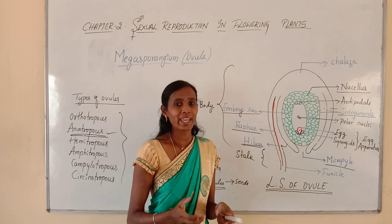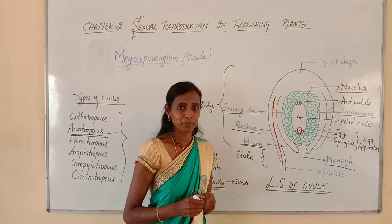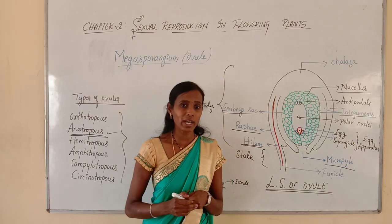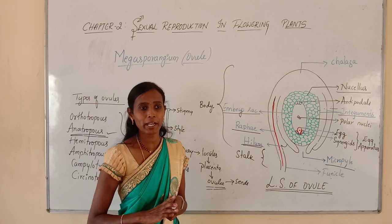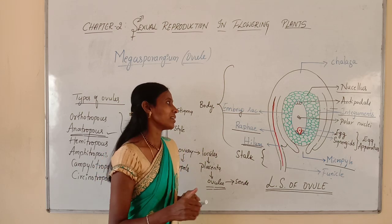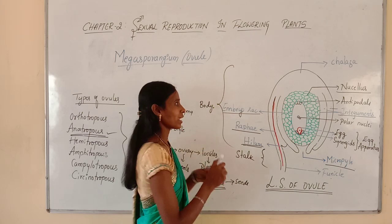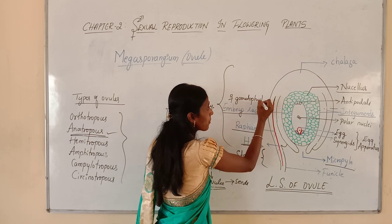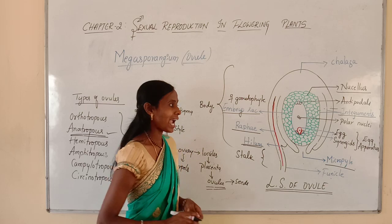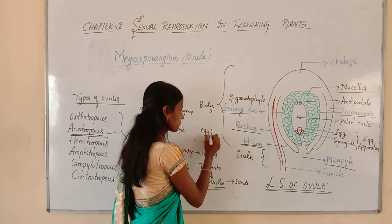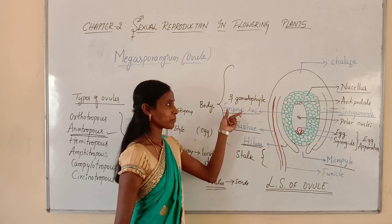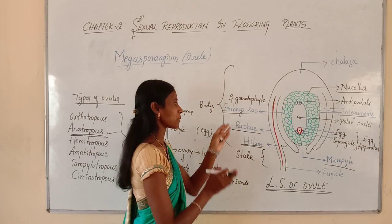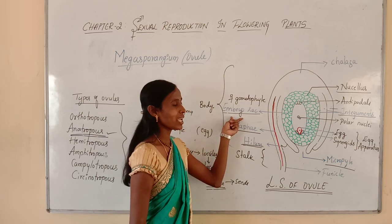The question arises: why is the embryo sac called a female gametophyte? You already know that the male gametophyte is the pollen grain, and it is called a male gametophyte because it produces male gametes. Similarly, the embryo sac is called a female gametophyte because it produces a female gamete. So embryo sac is the female gametophyte present within the nucellus, and it produces a female gamete.